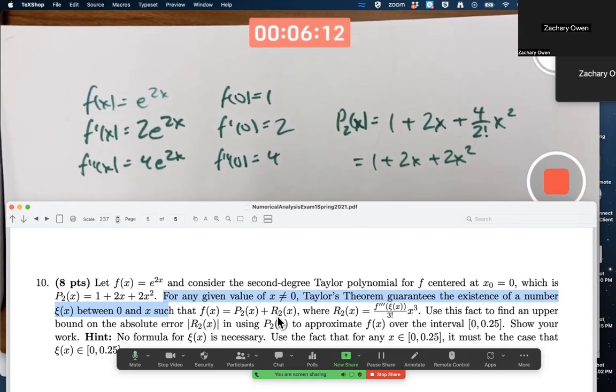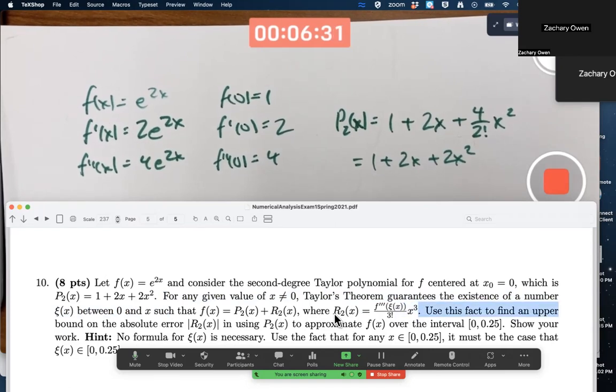By the way, you can certainly define r2 of x, whether it's got this formula or not, by just saying it's f of x minus p2, actual minus approximate, you could always define the error. What's special about Taylor's theorem is that the formula for the error takes this form. It's the third derivative of the function evaluated at an unknown number, xi of x, divided by 3 factorial times x cubed.